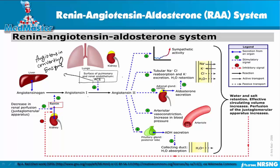When angiotensin 1 gets converted into angiotensin 2, angiotensin 2 has many effects on the body. The first effect is that it increases the sympathetic nervous system, which causes vasoconstriction and increases systemic blood pressure. When blood pressure increases, the kidneys get enough blood flow and become reperfused.